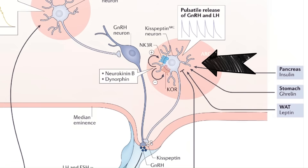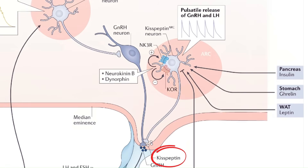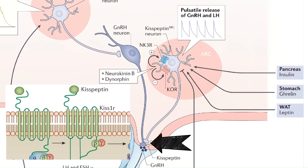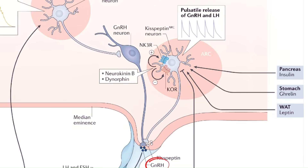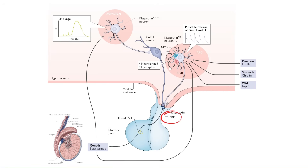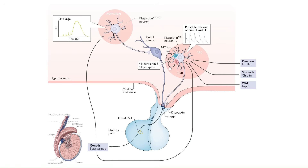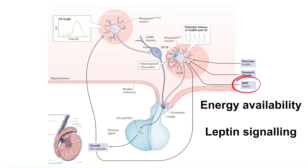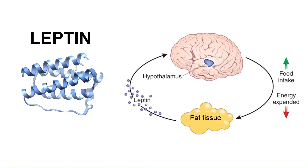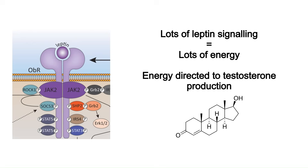For the other three substances it makes sense to go in order of the HPG axis, starting with kisspeptin. Kisspeptin neurons are brain cells in the hypothalamus that produce a peptide called kisspeptin, which binds to kiss receptors on GnRH neurons and causes them to release GnRH — kicking off the whole HPG axis and eventually resulting in testosterone production. Energy availability and leptin signaling are very important for this axis.